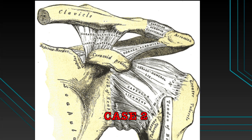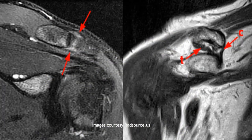Moving on to the next case, before we see the images, let's take a look at the anatomy of the acromioclavicular joint and coracoclavicular ligament complex. The acromioclavicular joint is formed by the lateral aspect of the clavicle and acromion process of the scapula. It is surrounded by a joint capsule and superior and inferior acromioclavicular ligaments. The coracoclavicular ligament complex is the main stabilizer of the AC joint, formed by the conoid ligament and trapezoid ligament, marked as C and T respectively.